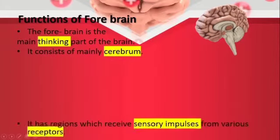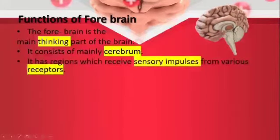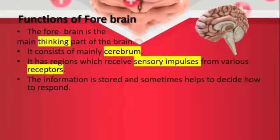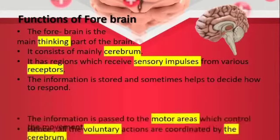The cerebrum has regions that receive sensory impulses from various receptors. Once it takes in the sensory impulses, it stores them, and when the situation demands, it will respond. This is the function of the cerebrum.